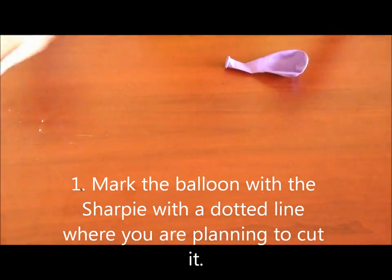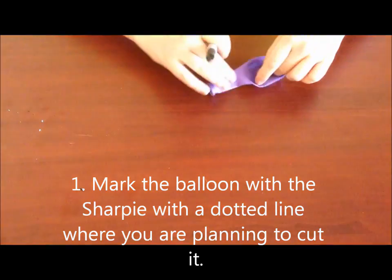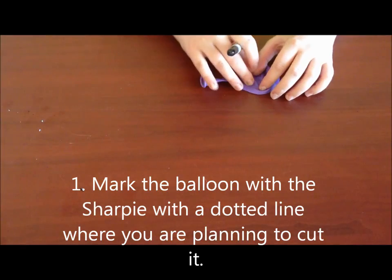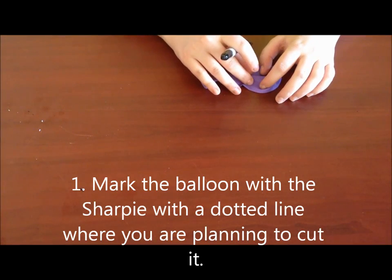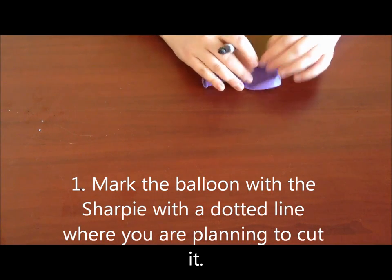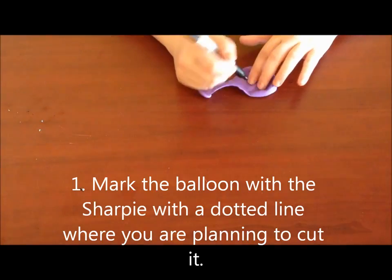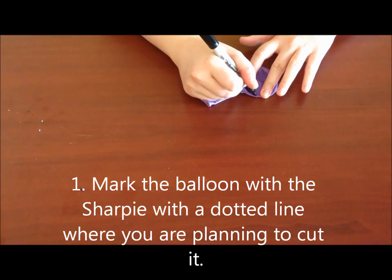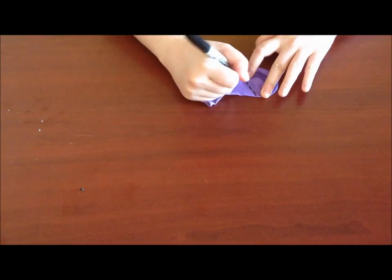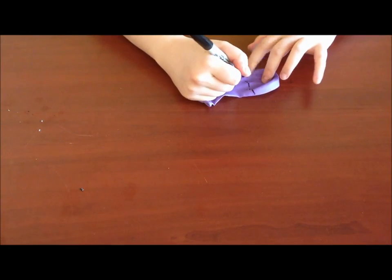The first thing we're going to do is mark our balloon where we're going to want to cut it. The easiest way to do it is to think about - you want it to be thinner on the bottom than it is on the top, but you don't want it to be so thin it won't fit around the funnel. I usually like to mark it right about here on the balloon, just give it a little dotted line so I know to cut right there.